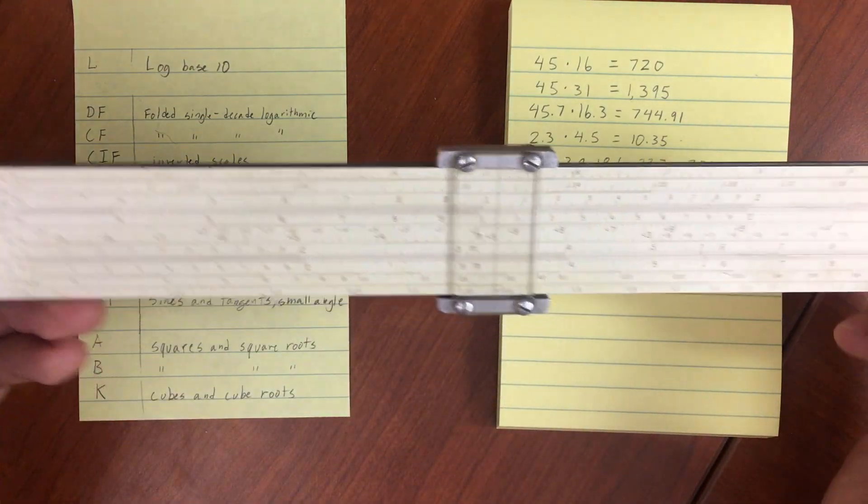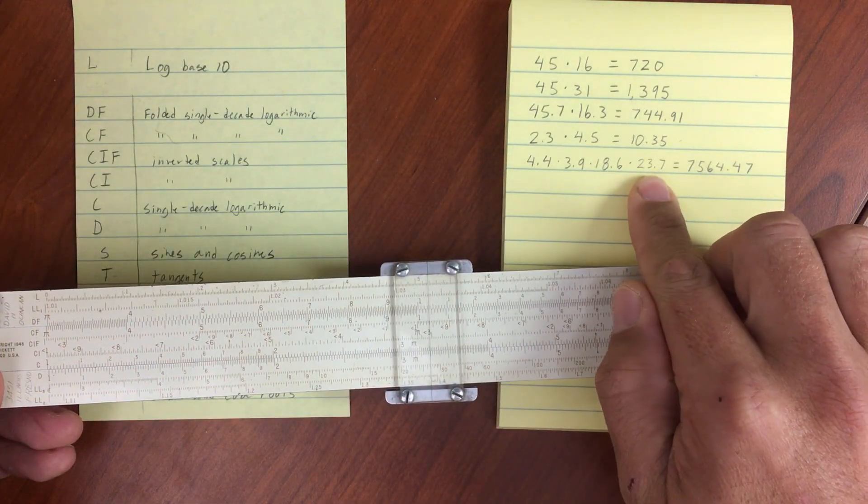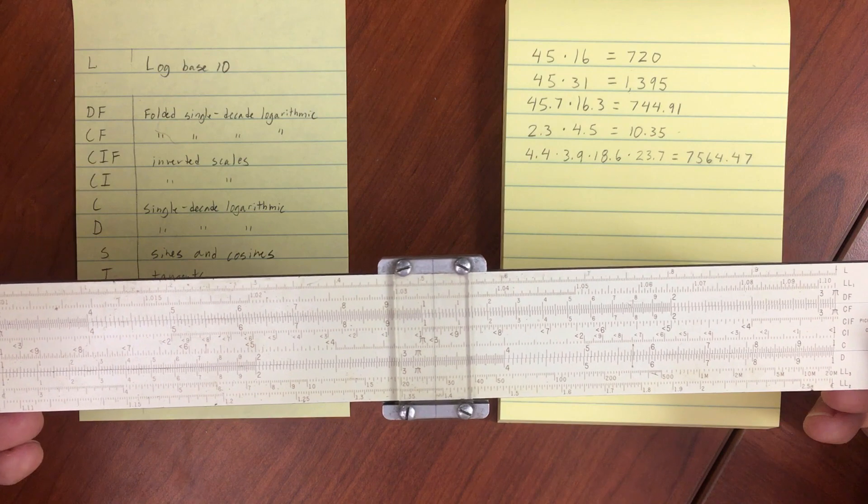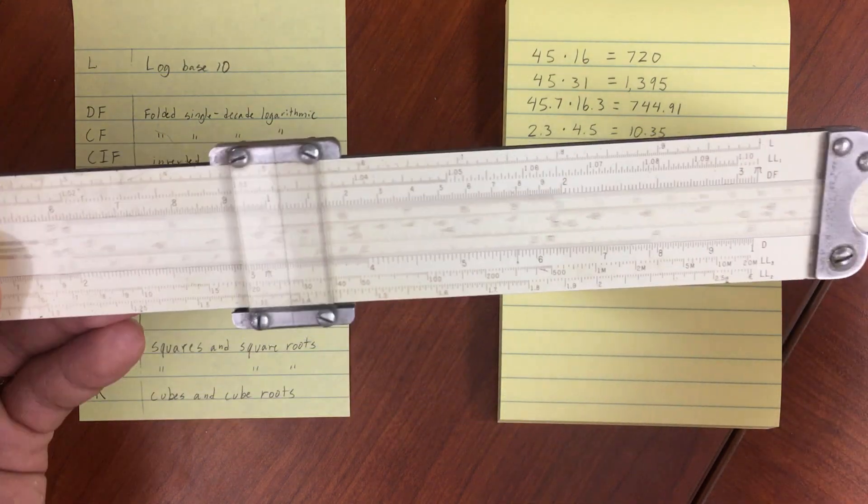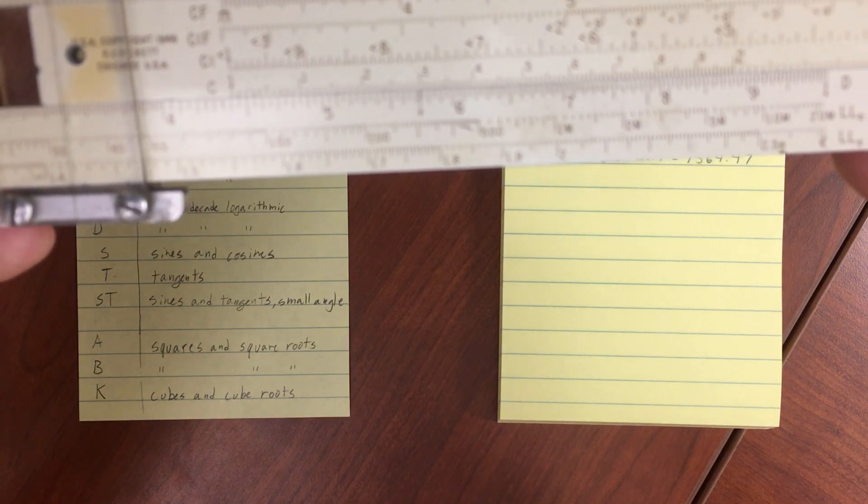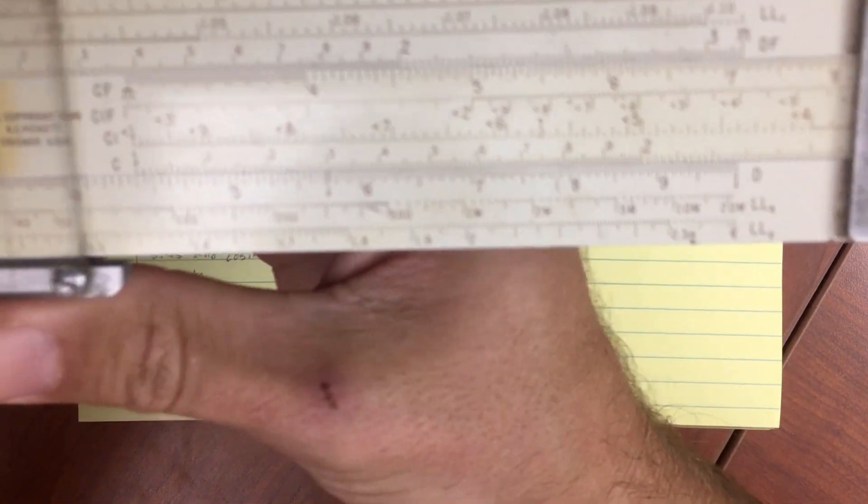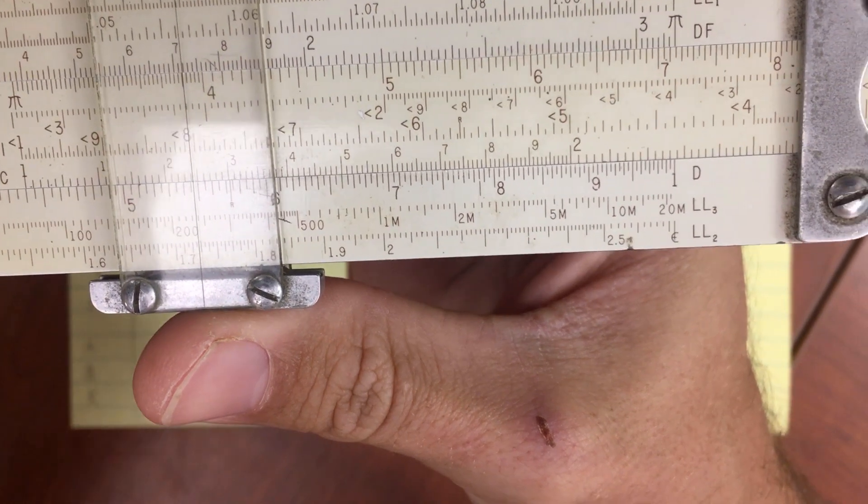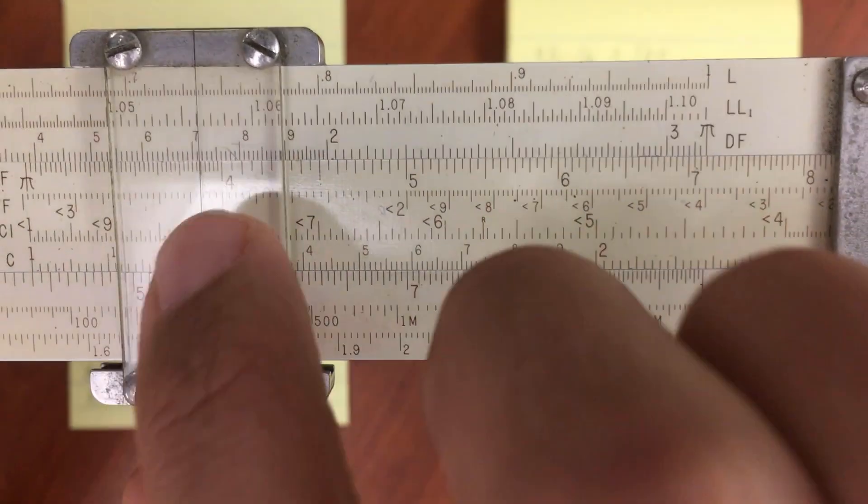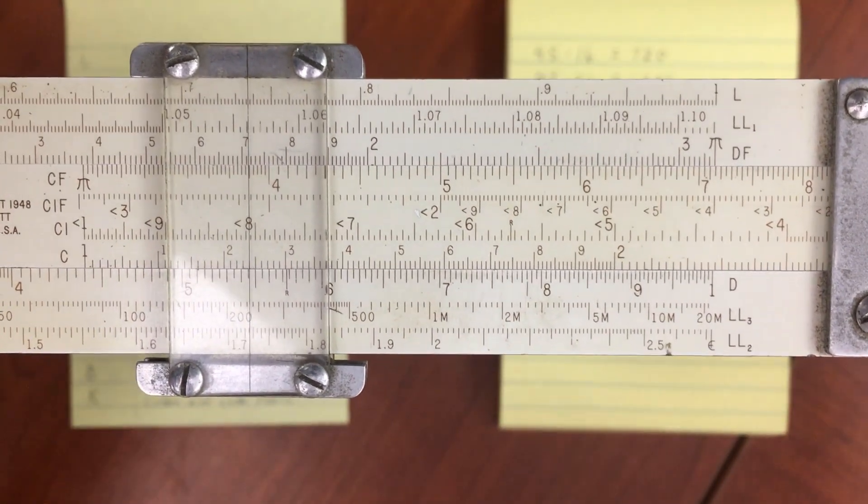Alright, last thing we are going to do is apply a chain calculation. So I've got four sets of numbers that I wanted to multiply here. And we'll see if we get that result in the end. So let's use all of those different kinds of multiplication we've used so far. So let's do 4.4 first. So I move over to 4.4. And then 3.9 is our second number. So let's use our folded scale since we're off the edge. So 3.9 is our second number. And then I don't even have to remember this number that I'm at currently. I can just go ahead and use the scale.